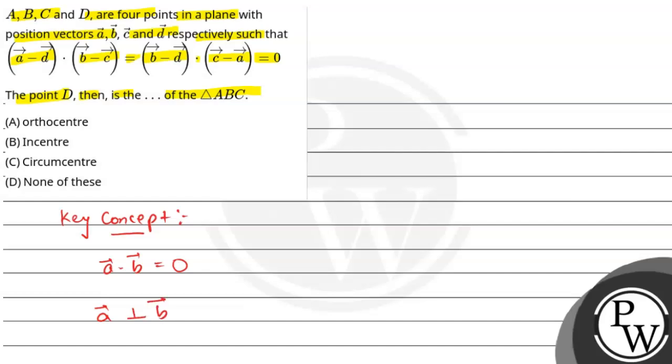If we have a triangle with points A, B, C, and we find the position vectors, say AB vector equals B vector minus A vector, then we will use this concept in this question.